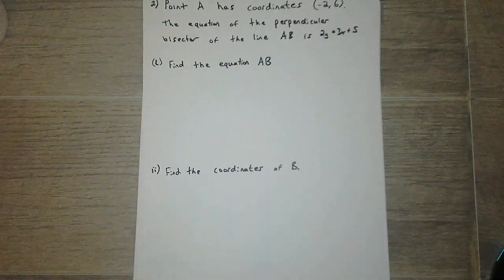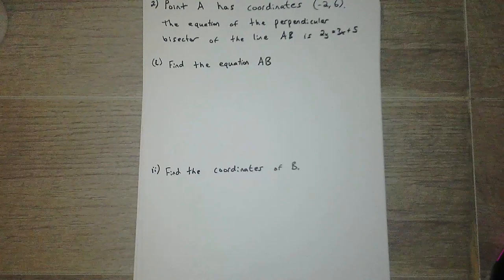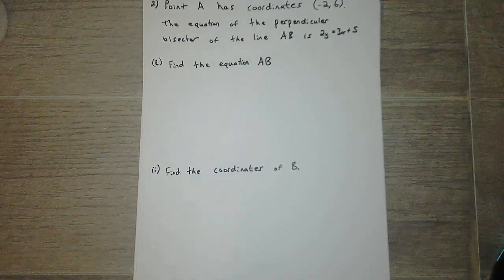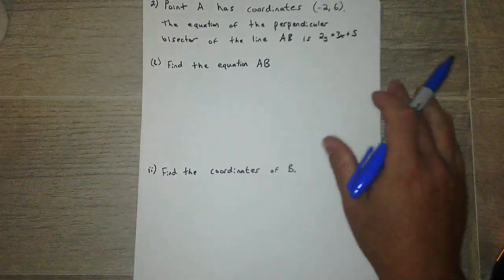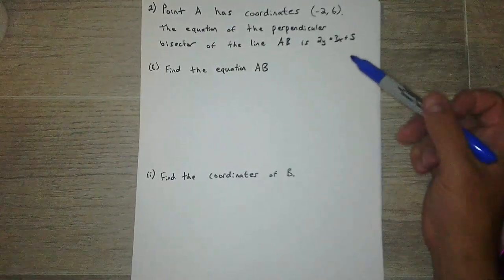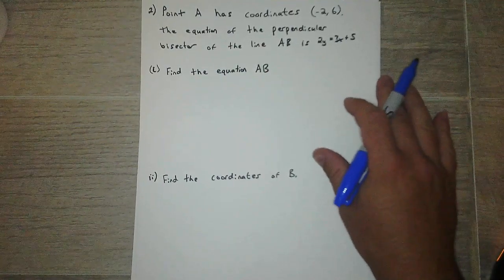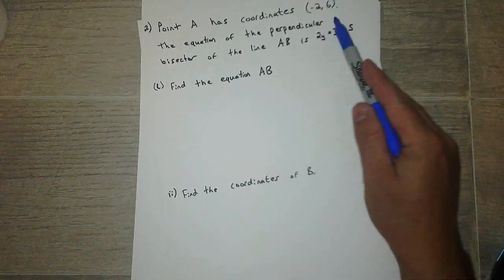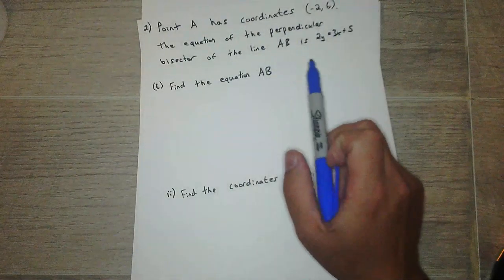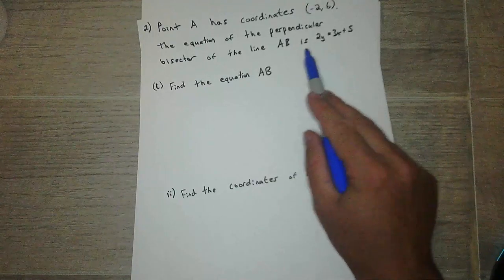Okay, number 2. So this was binomial expansion, I believe that was chapter 7 or chapter 8. This is coordinate geometry, this was like chapter 1, so it's one of the very first things we did. Alright, so point A has coordinates (2, 6), and the equation of the perpendicular bisector of the line AB is given by this equation.